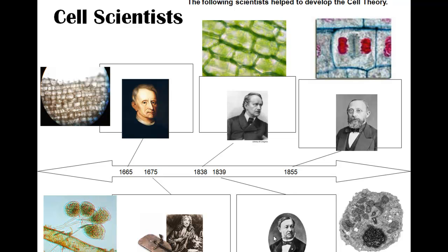Now we're going to talk about the scientists who helped develop what's called the cell theory. Starting in the mid-17th century, we had Robert Hooke. Robert Hooke was a monk, and monks had a lot of free time alongside their church services, religious duties, and community outreach — and his interest was actually looking through scopes at nature.